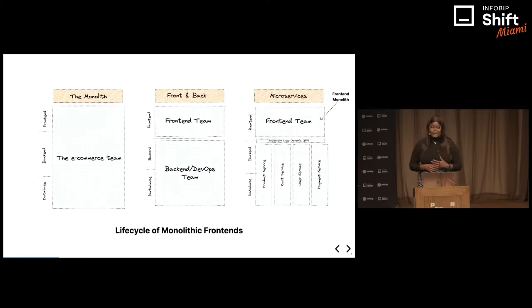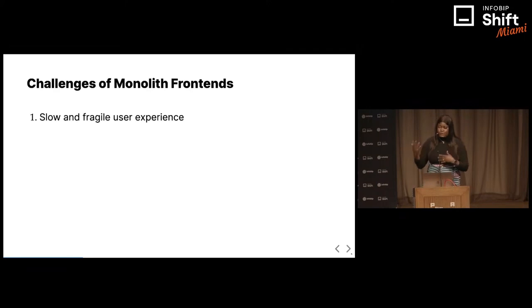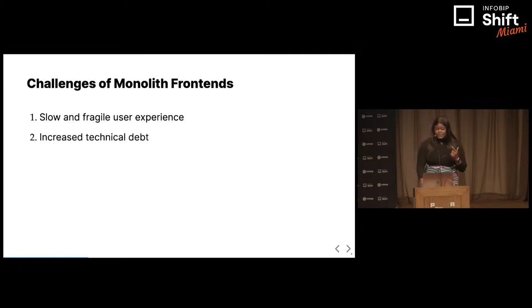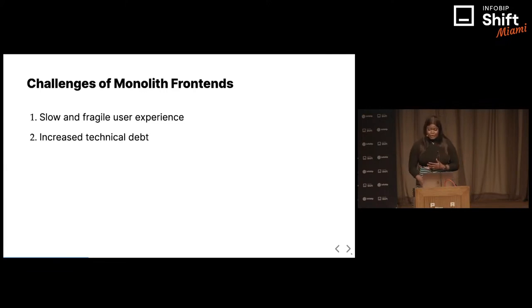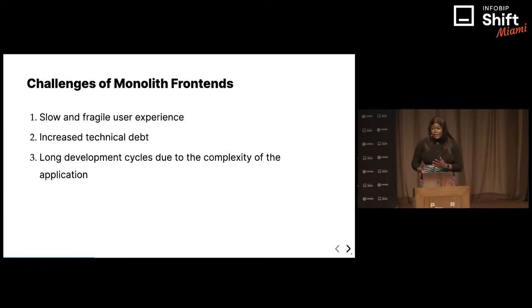As frontend developers working in a large-scale application like that, you would possibly feel like the dog earlier. So what are the challenges of monolith frontend? The first problem is that it becomes slow over time. Also, the user experience of the application can suffer. When you have a large application that several teams are working on as a single unit, you can incur technical debt over time. And lastly, it takes very long to ship code — the development cycles become very complex because of so many dependencies in your application.